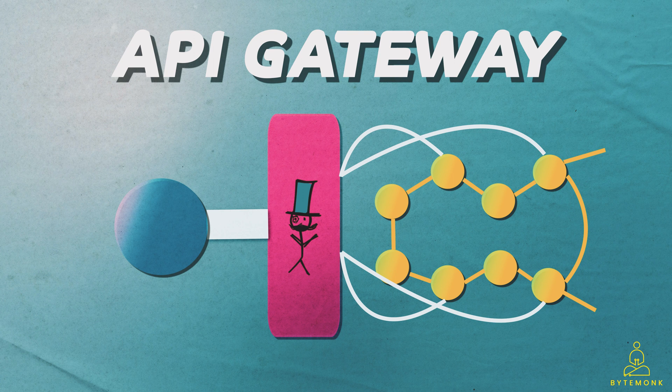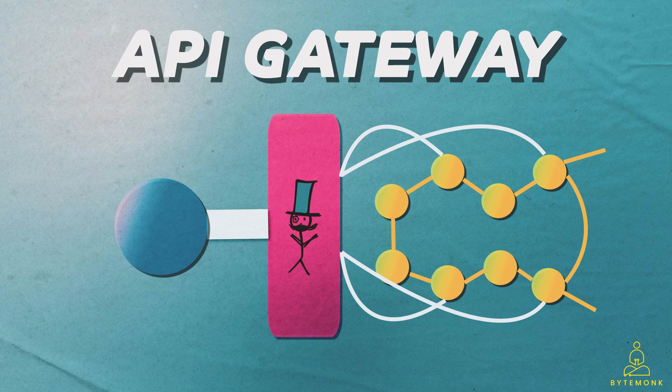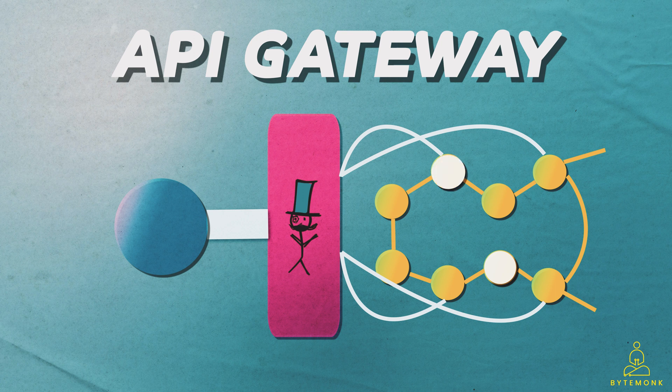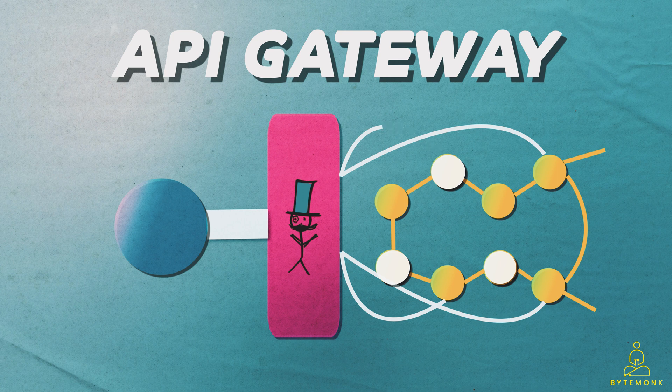Let's say that you are designing an e-commerce website that needs to integrate with multiple backend services such as inventory management, order processing and payment management. The API Gateway will act as the entry point for all external traffic and will route requests to the appropriate backend service.